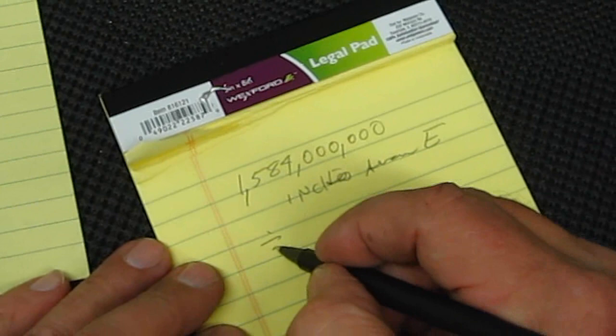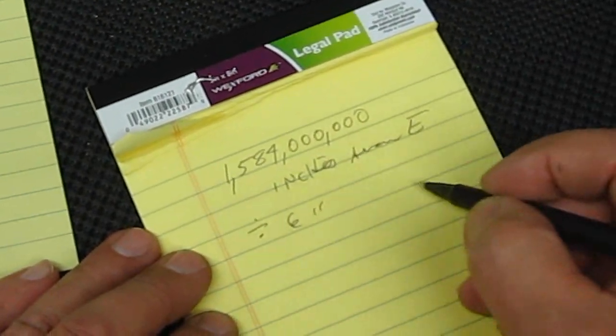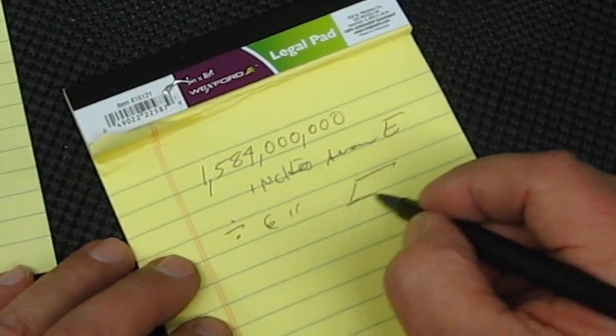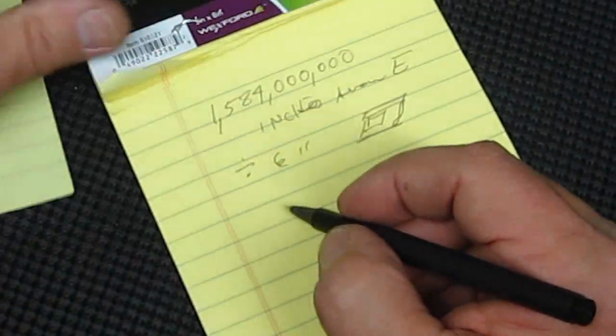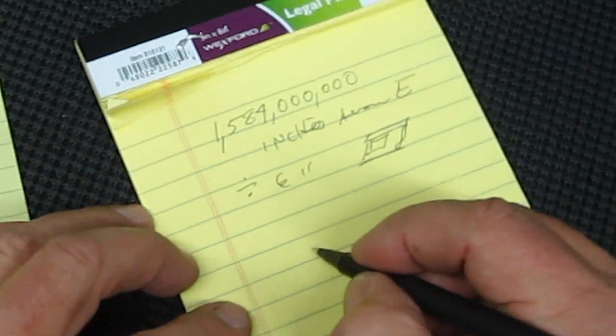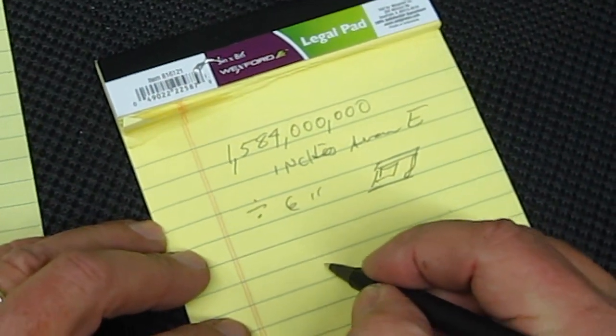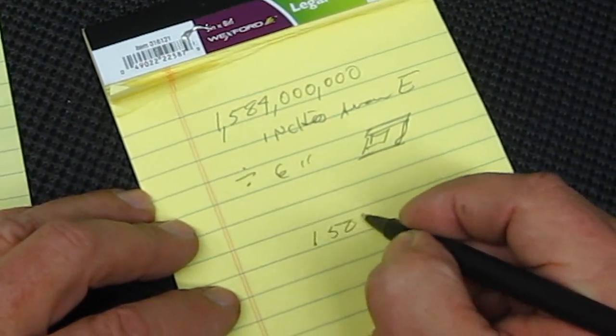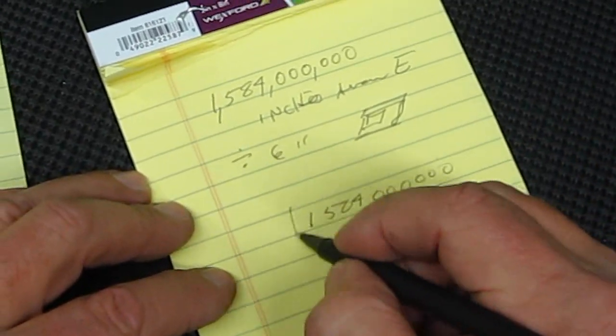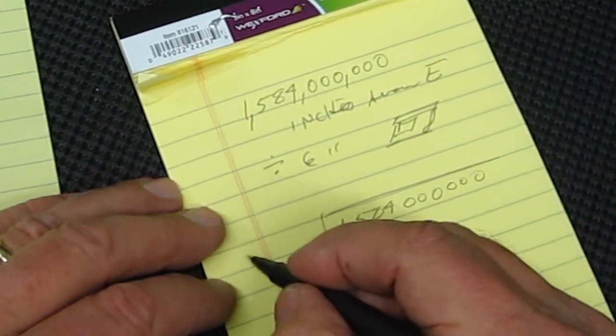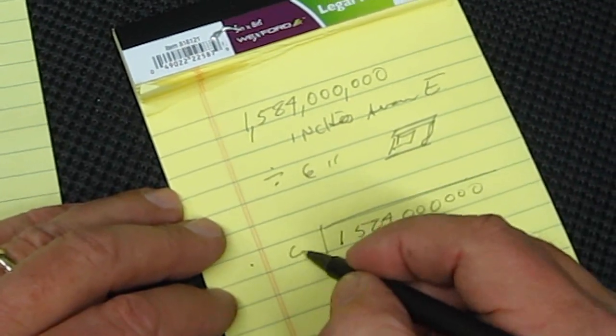Now we want to divide that by six inches, that's the average length of a cell phone. Okay, and to do that, well let's see, I will take and divide it by, let's see, what did I say, six inches.